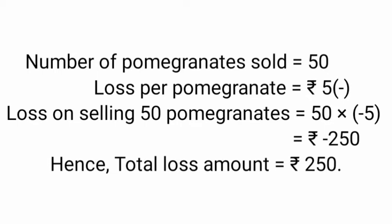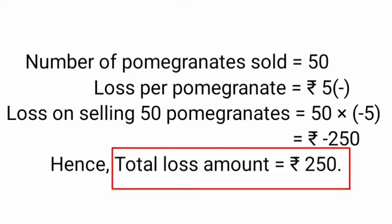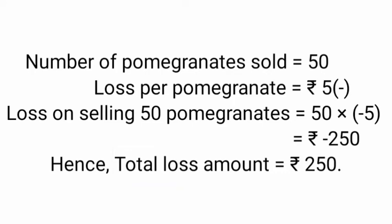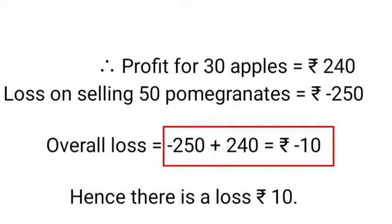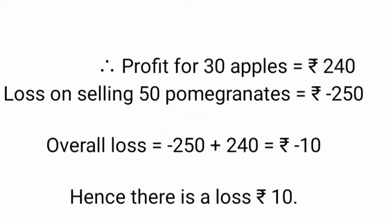Now we need to find the total loss on selling 50 pomegranates. To get the loss amount we multiply 50 by 5; the minus indicates loss, so total loss is Rs. 250. To get the overall profit or loss we add the profit and the loss together: minus 250 plus 240 gives us minus 10. This minus indicates loss, so there is a loss of Rs. 10 on selling the fruits.